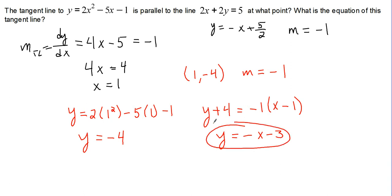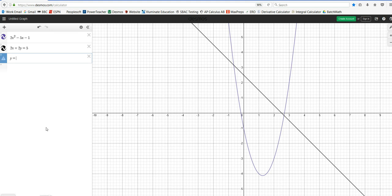We can go back to our graph and confirm that this is true. y equals negative x minus 3. Yep, definitely tangent to the parabola at the point (1, -4), and they clearly have the same slope of negative 1.